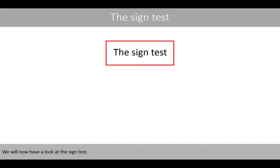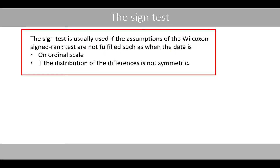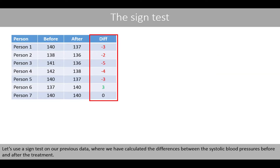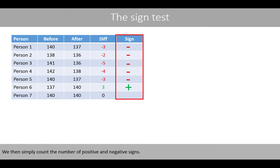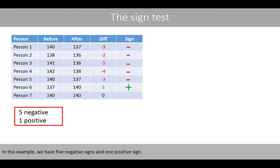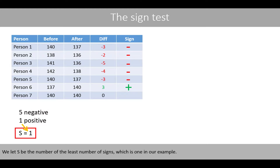We will now look at the Sign Test. The Sign Test is usually used if the assumptions of the Wilcoxon Signed-Rank test are not fulfilled, such as when the data is on an ordinal scale or if the distribution of the differences is not symmetric. Instead of ranking the differences, we assign a negative sign to negative differences and a positive sign to positive differences, then count the number of each. In this example, we have five negative signs and one positive sign. We let s be the smaller count of signs, which is 1.